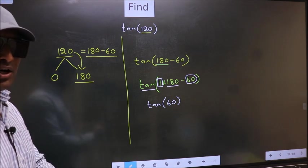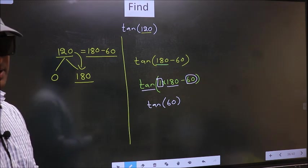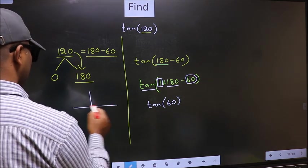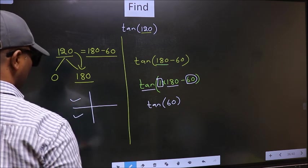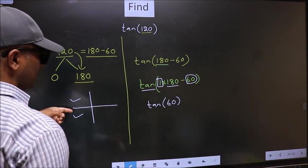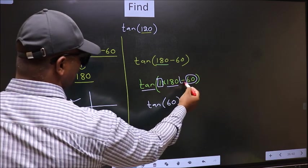And all the odd multiples of 180, they lie either in the second or in the third quadrant. So now to select the quadrant, we should look at this symbol.